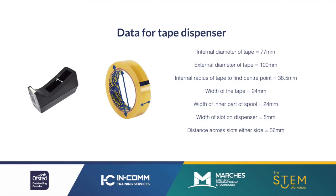Once you have decided on your product, you need to capture data to be able to manufacture the missing part. In this case the part we want is missing, so we have to find measurements from the other two components. We found our measurements from the dispenser and the tape itself and captured the key data needed to manufacture the product — including the internal diameter of the tape, the external diameter — working to the nearest millimetre at least.